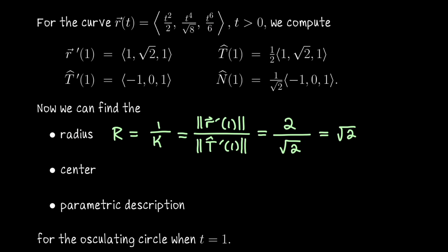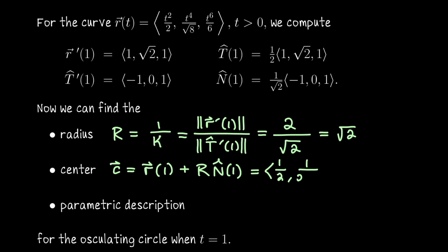To find the center, which I'll denote as the vector c, we start at the point on the curve — that's R(1) itself — and travel the length of the radius along the direction of the normal vector. The unit normal n̂ points in the direction of the radius, so from the point on the curve we go that direction for the length of the radius to reach the center. R(1) is (1/2, 1/(2√2), 1/6), plus the radius √2 times the normal vector (1/√2)(-1, 0, 1).